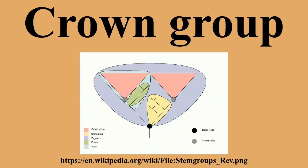A pan group, or total group, is the crown group and all organisms more closely related to it than to any other extant organisms. In a tree analogy, it is the crown group and all branches back to the split with the closest branch to have living members. The pan-Aves thus contains the living birds and all organisms more closely related to birds than to crocodilians. The phylogenetic lineage leading back from Neornithes to the point where it merges with the crocodilian lineage, along with all side branches, constitutes pan-birds.